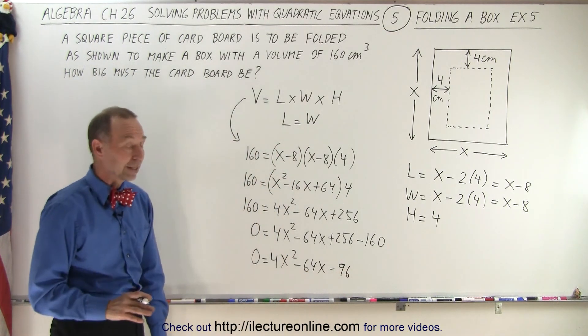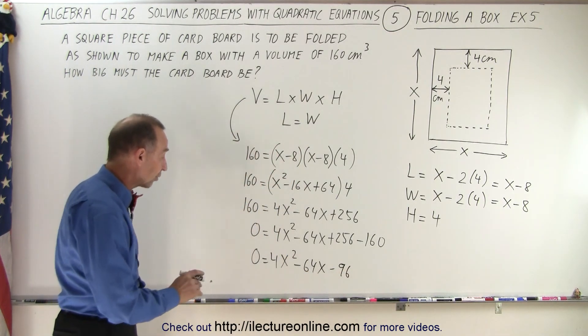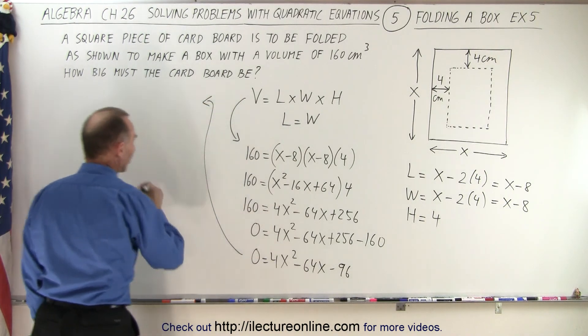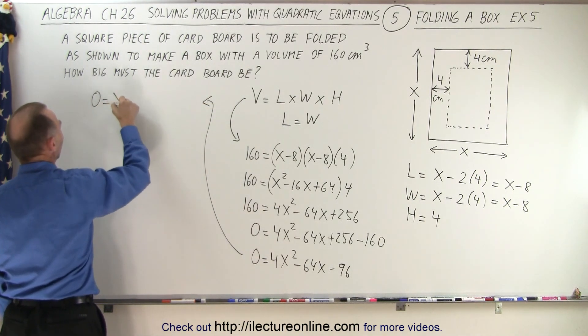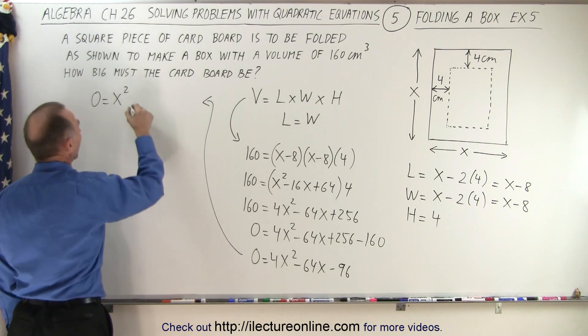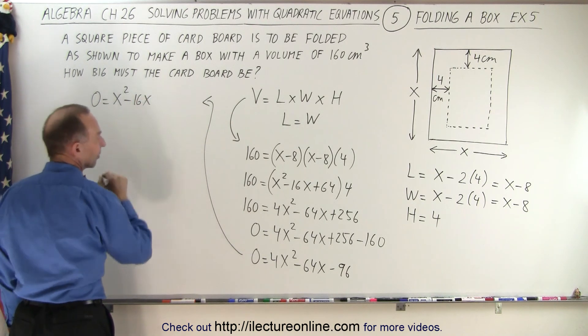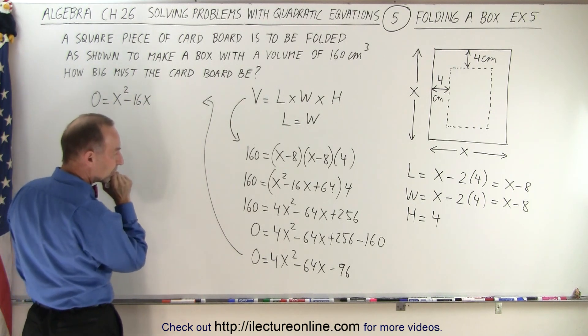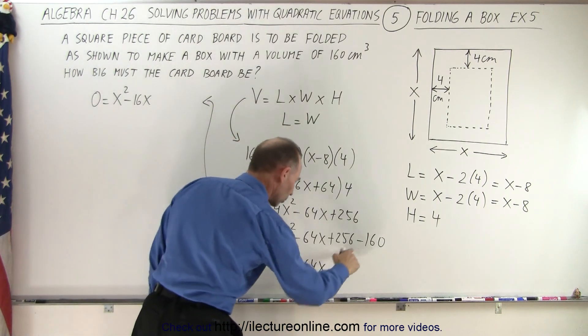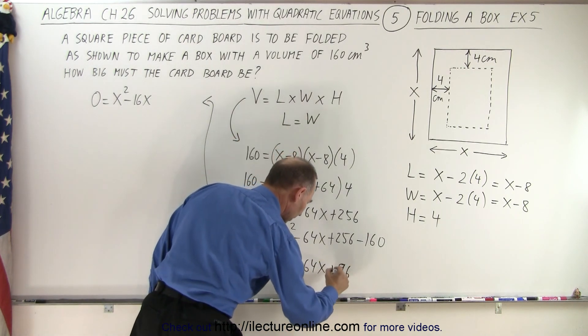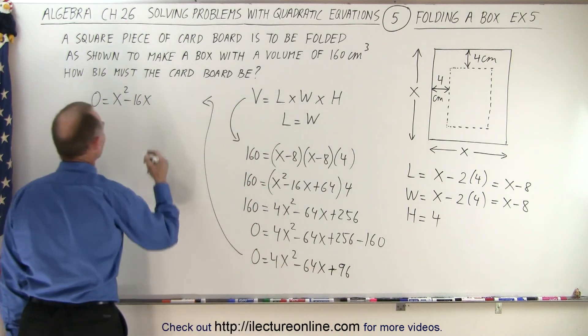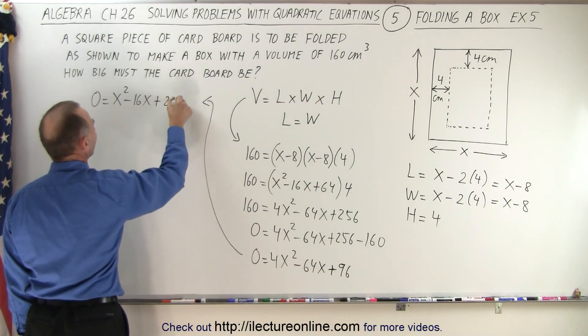And it looks like we can divide both sides of the equation by 4. So when we do that we end up with 0 equals x squared minus 16x and minus, is it minus? Oh no no no, this is plus. We've got to be careful. That's bigger than this so this is plus 96 divided by 4, so plus 24.